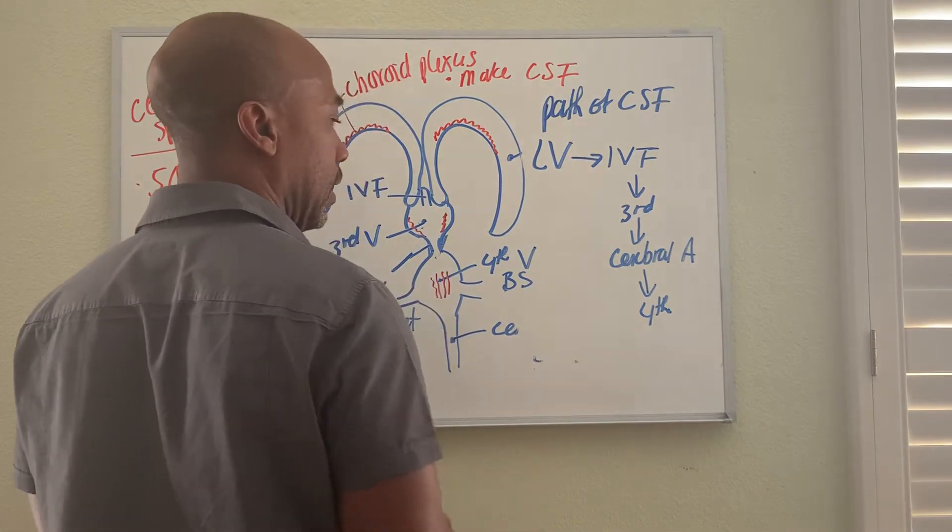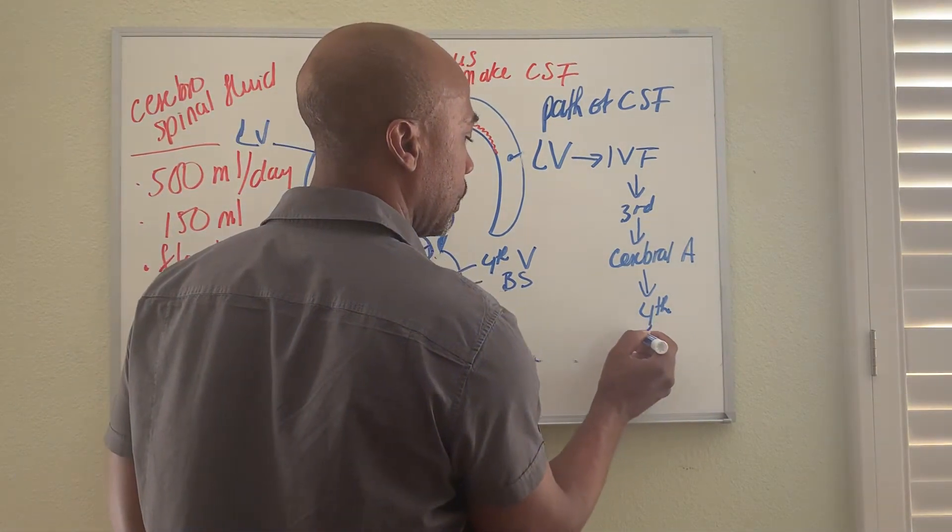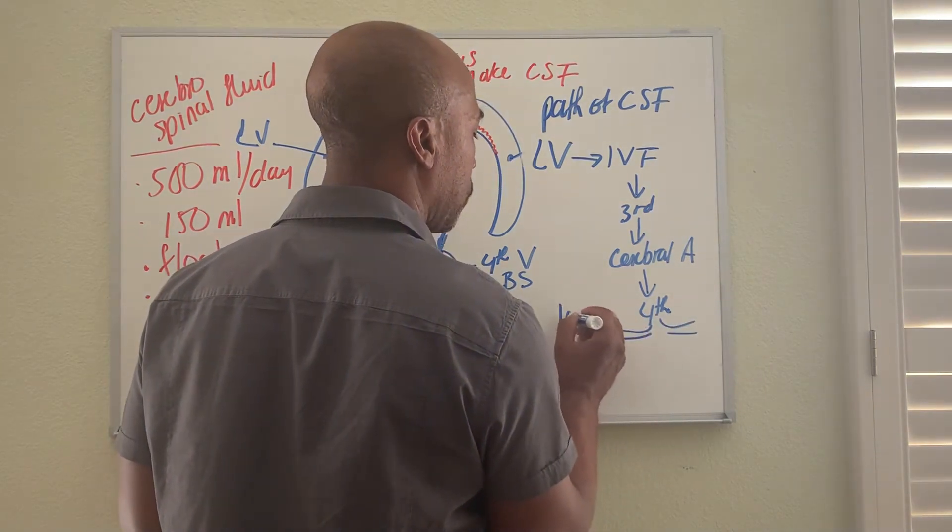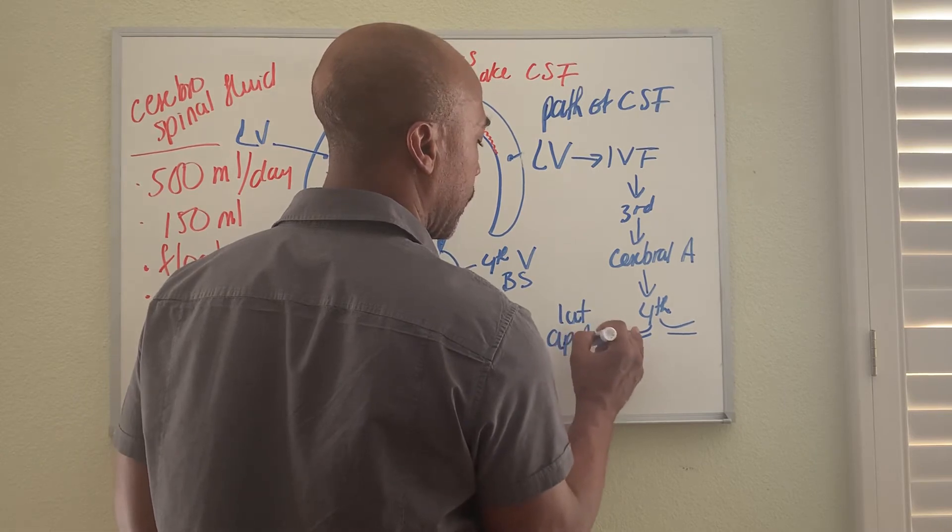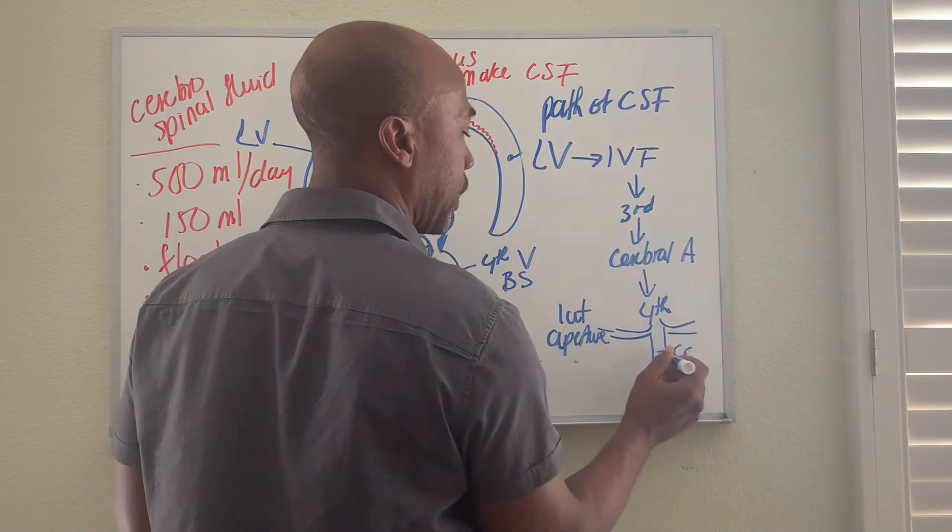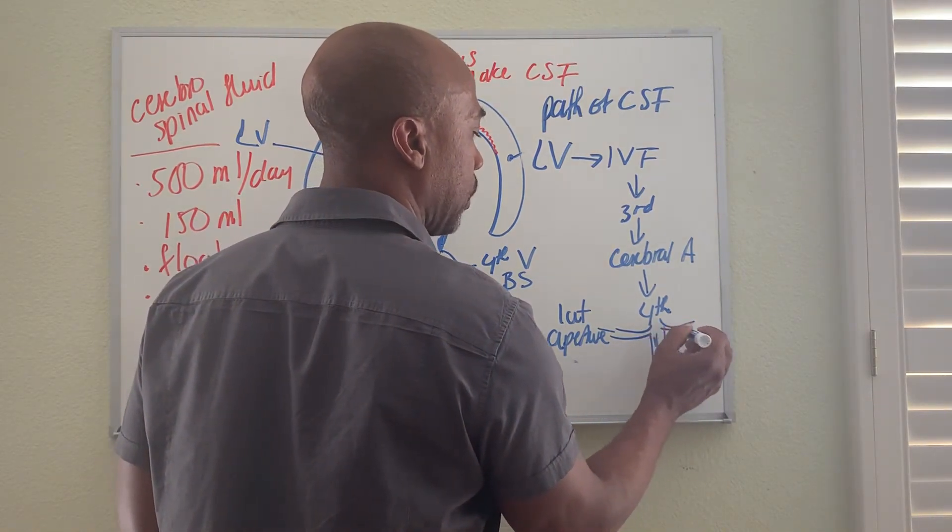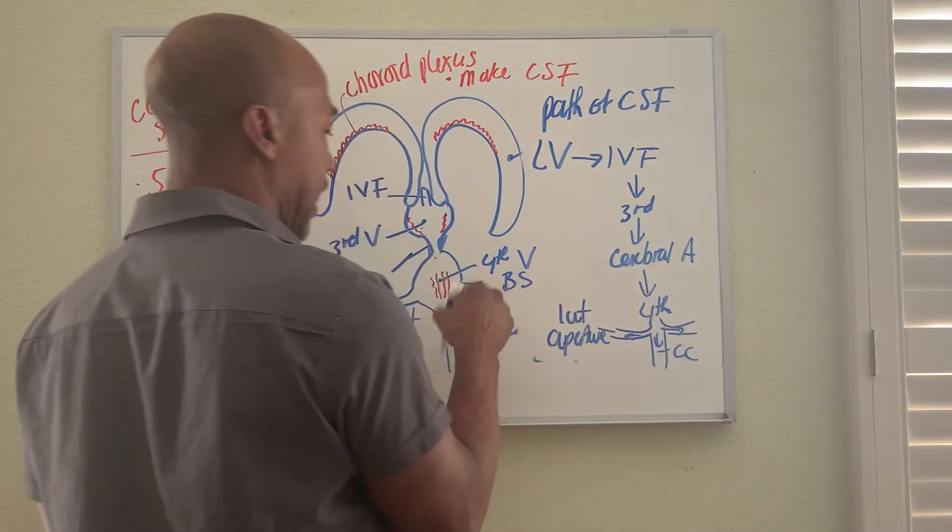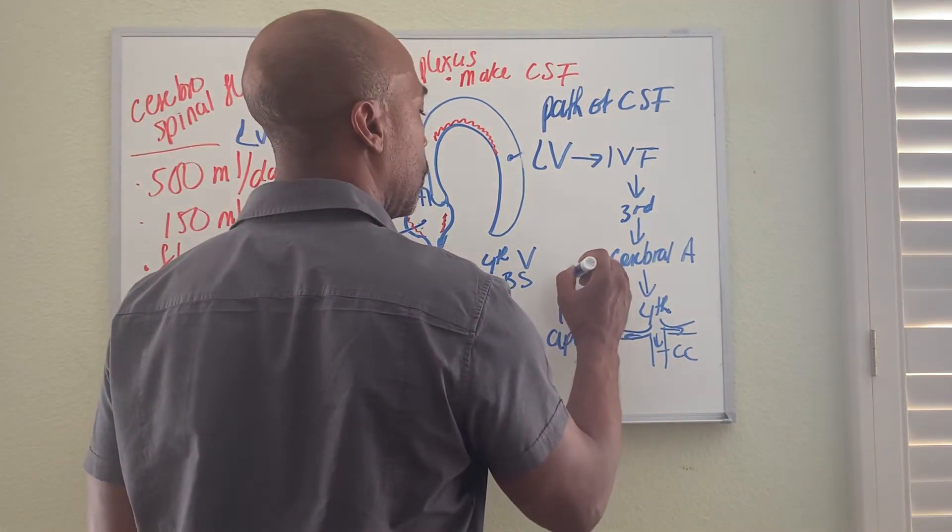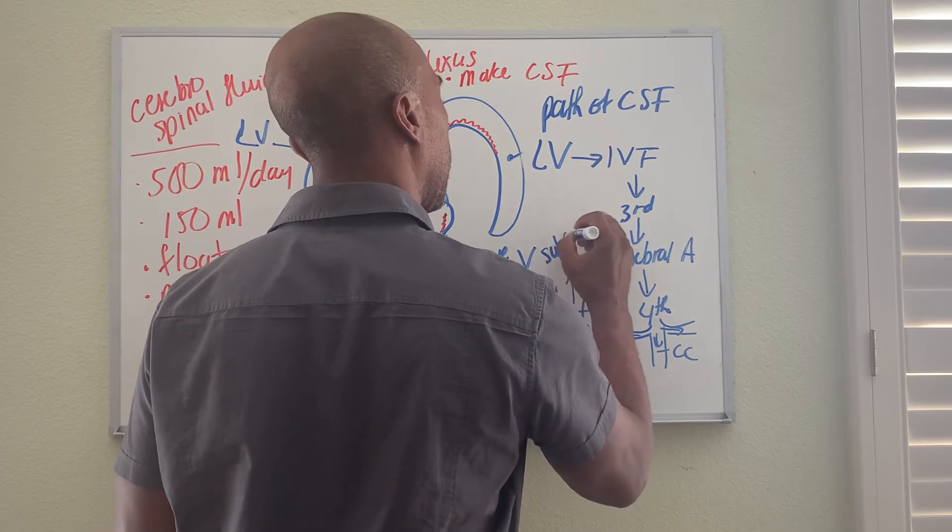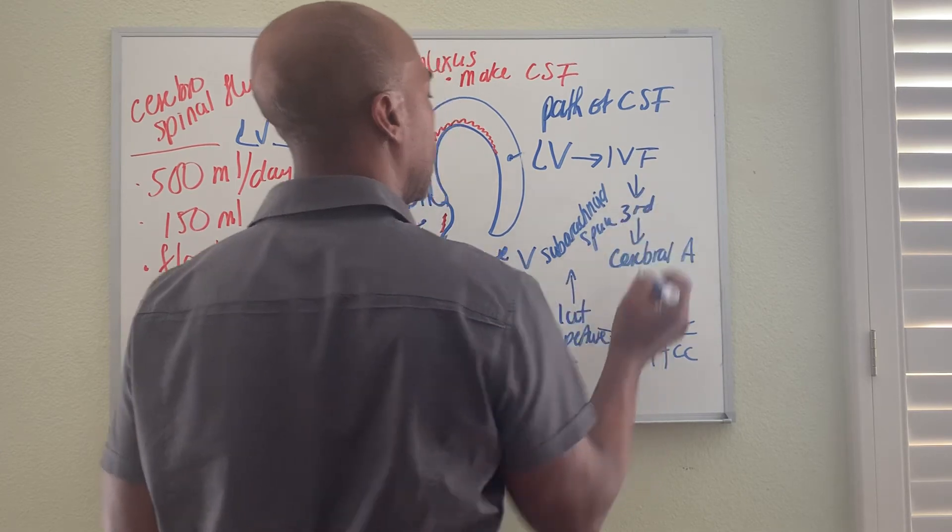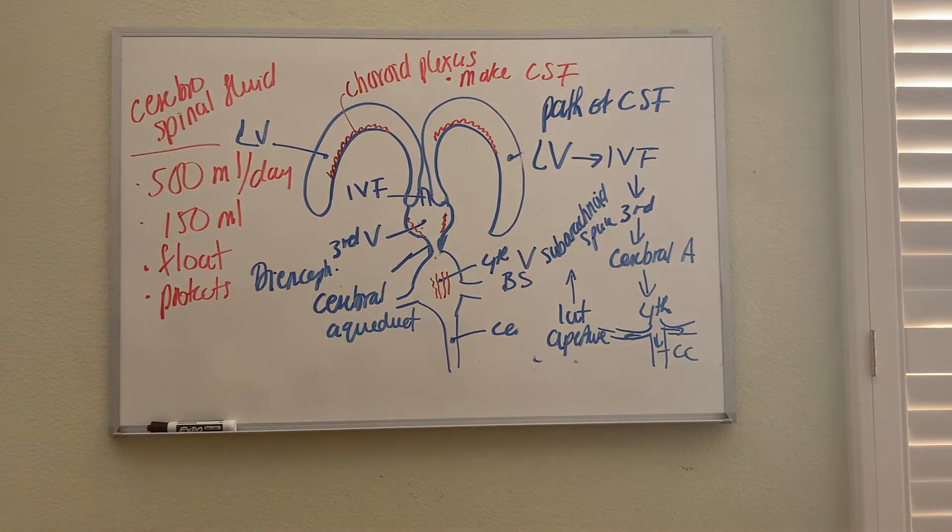From the fourth ventricle, a lot of the CSF will escape out into what's called your lateral aperture. Some will flow into the central canal below. So it goes both places. From the lateral aperture it then goes into your subarachnoid space, and now it's around the brain.